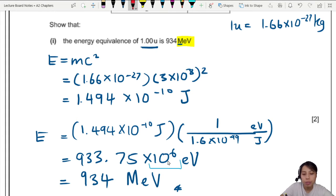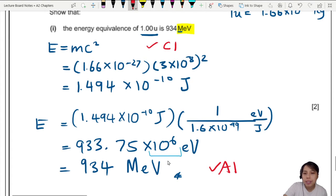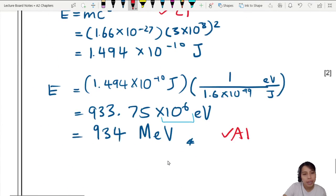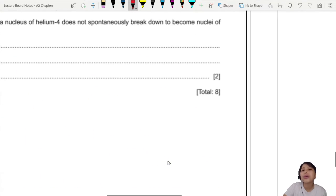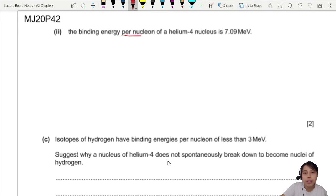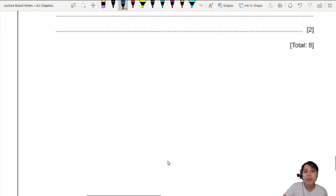This is two marks. So if you manage to do the final part and get to that value, that's one mark. If you use the EMC square equation, that's one mark there for you as well. All right, moving on. Part 2. Show that the binding energy per nucleon of this helium-4 nucleus is 7.09 MeV.